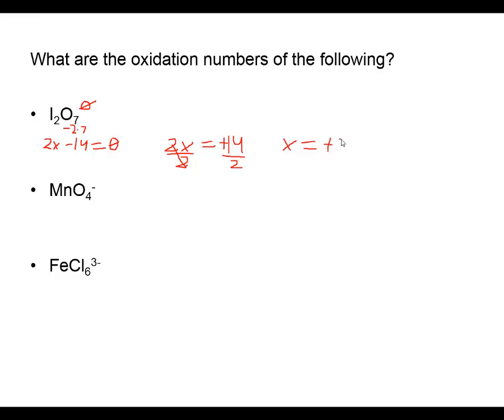If I'm looking at the permanganate ion MnO₄⁻, I don't have a rule for manganese - it's a transition metal that can have a variety of oxidation states. Since it's not a peroxide, the oxidation number of oxygen is a negative two times four oxygens.